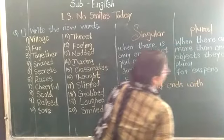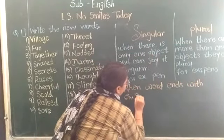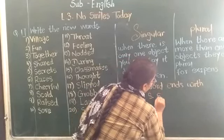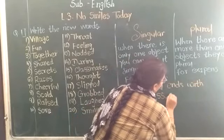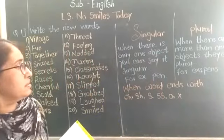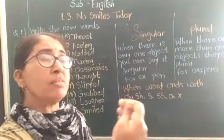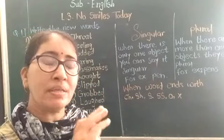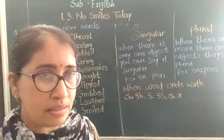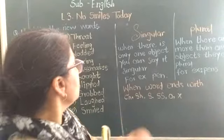It is not compulsory that we can make all nouns plural by adding only S. There are some rules to make them plural. When the noun ends with CH, SH, SS, O, or X, we use a different rule.